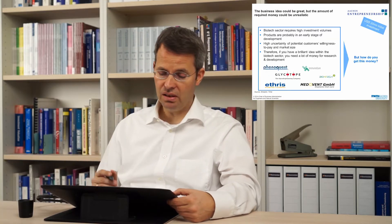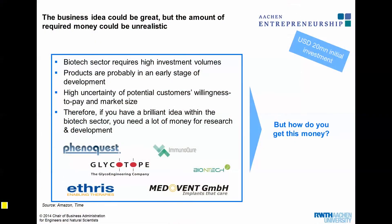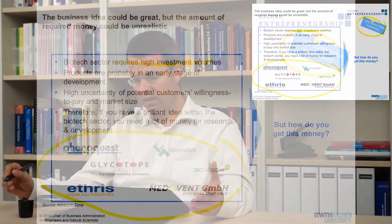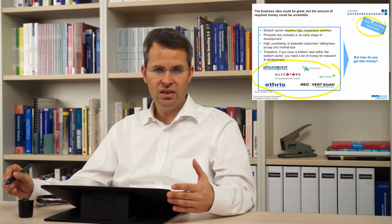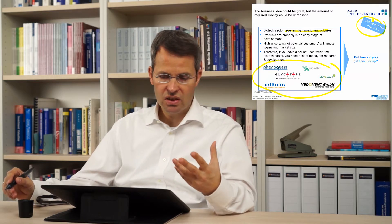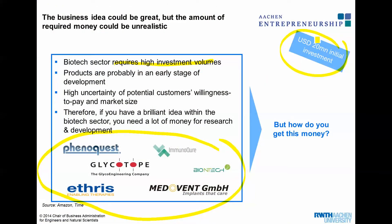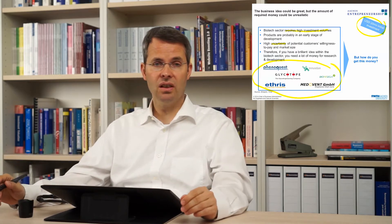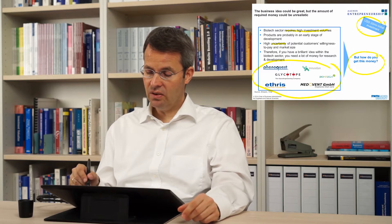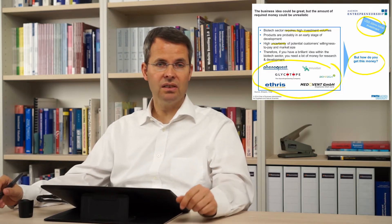This is an example many biotech companies face. If you start a biotech company, you normally need a lot of money — it requires high investment volumes, maybe 20 million dollars or more. Products are very early stage; it often starts just with an idea, a functioning principle, and then you want to use that principle to build your biotech company. It's really uncertain whether you will be successful with your technology, or whether customers are going to buy it later on. So how do you get millions of dollars in that moment?